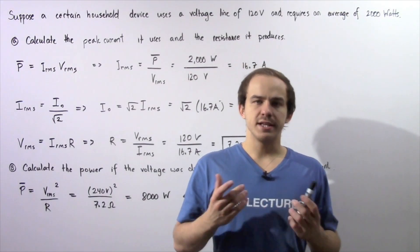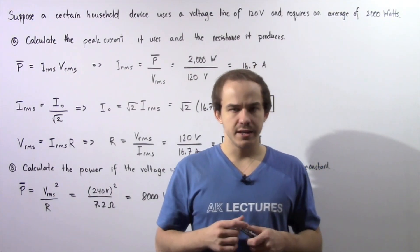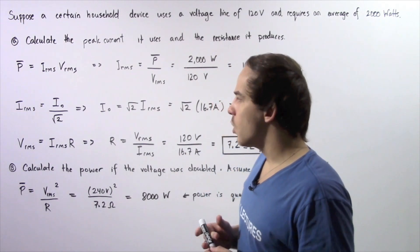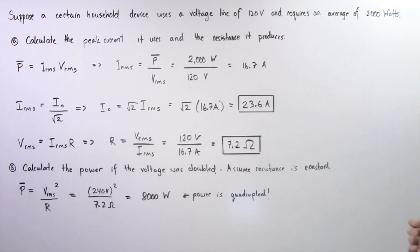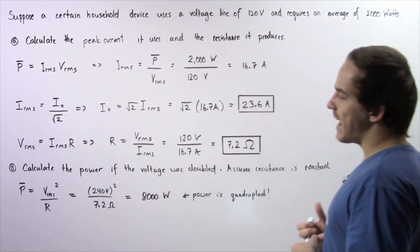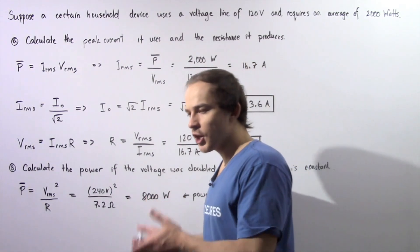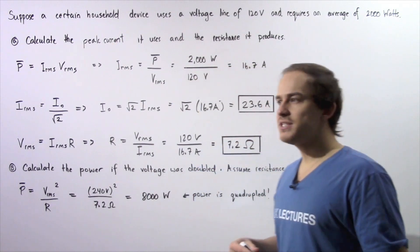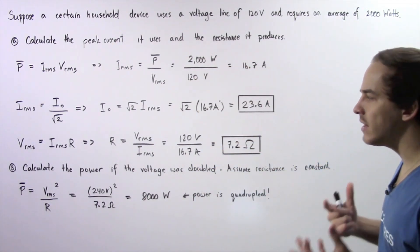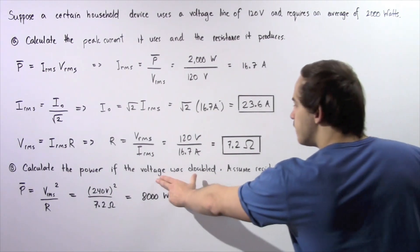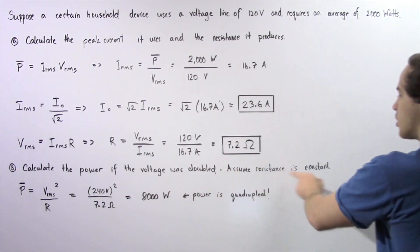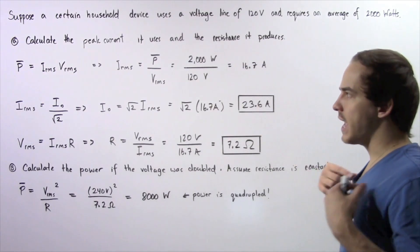Let's look at an example dealing with alternating current. A certain household device uses a voltage line of 120 volts and requires an average of 2000 watts of power. In part A, we calculate the peak current it uses and the resistance. In part B, we calculate the power if the voltage is doubled, assuming the resistance remains the same as in part A.